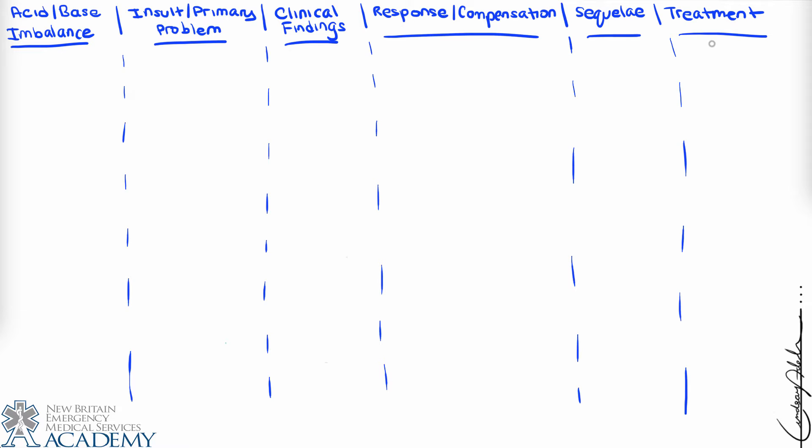We want to differentiate the origin of the problem — whether it's respiratory or metabolic — and we need to know the pH to classify it as acidosis or alkalosis. Unlike in the hospital where patients have arterial blood gases drawn, in the field we won't have access to lab values. We have to base our understanding entirely on the patient's presentation and our knowledge of the carbonic acid bicarbonate buffer system.